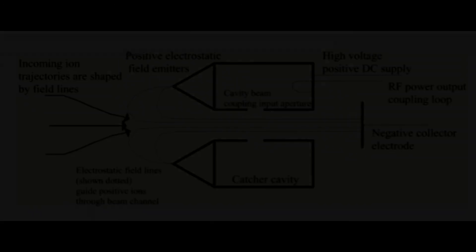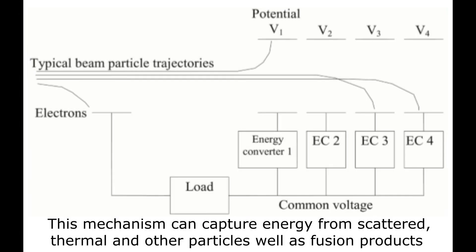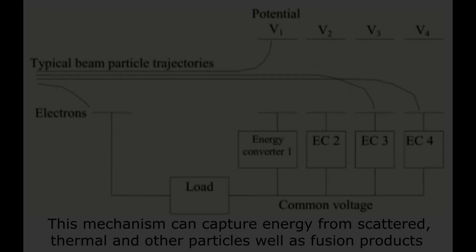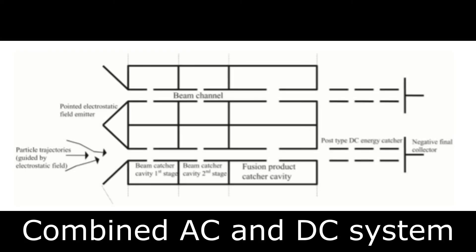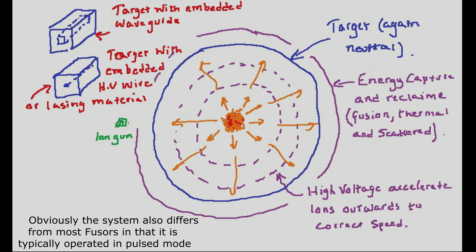In the DC version, the energy is reclaimed by a series of collector grids at different staged potentials. This energy reclaim system is placed outside the target as shown on the diagram on the screen and collects all the energy from both the beam and fuser products and scattered and thermally excited products.